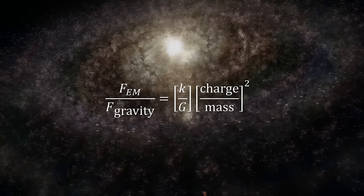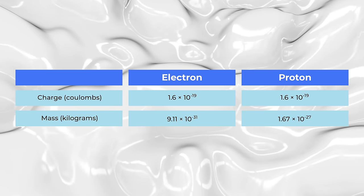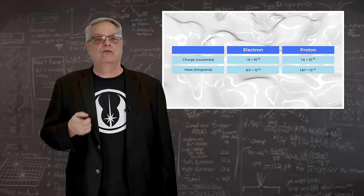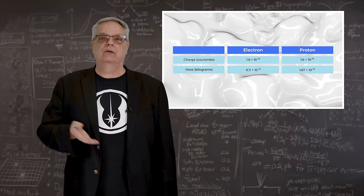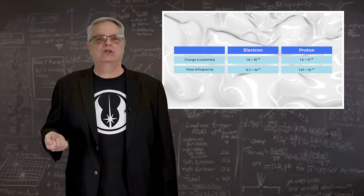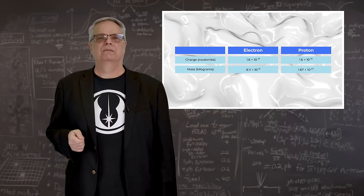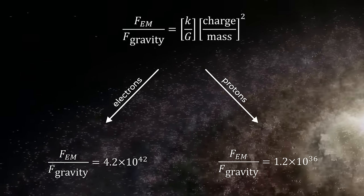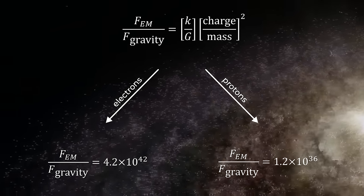What matters is the charge-to-mass ratio, and this isn't a constant. For example, take the electron and the proton. They have the same amount of charge, but different mass. So, for two electrons, gravity is 4.2 times 10 to the 42 power times weaker.